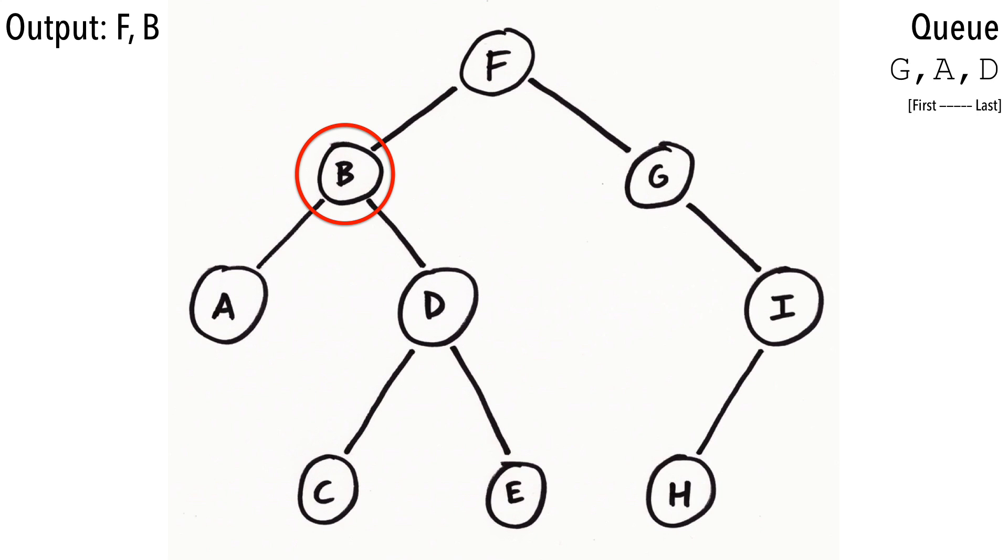We're ready to dequeue another element, this time, G. We'll first remove G, then attempt to add his children. However, we only find a right child, I. I hope by now you see the pattern. Let's watch the rest of the algorithm play out.